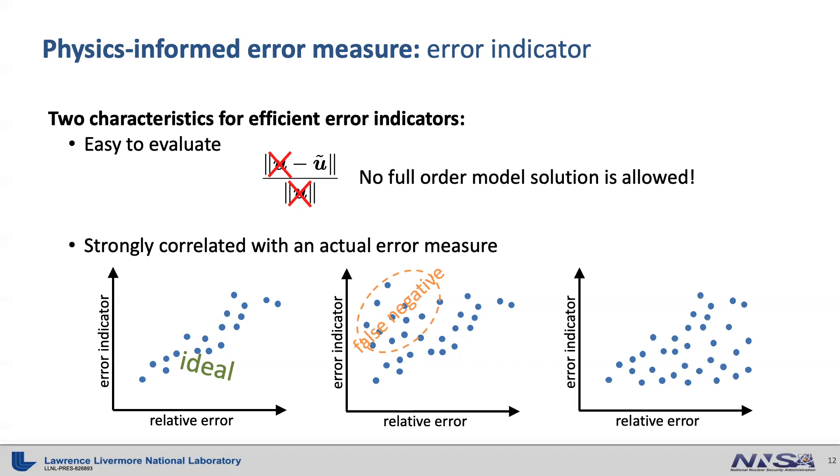However, sometimes we may get this kind of correlation where this region gives false positive, meaning that the actual accuracy can be bad although the indicator tells us that it is not. This is really bad because the final set of sampling points determined by this error indicator may not guarantee the desirable accuracy at all. So, it would be nice for you to check this correlation first before you deploy the error indicator in the greedy procedure.